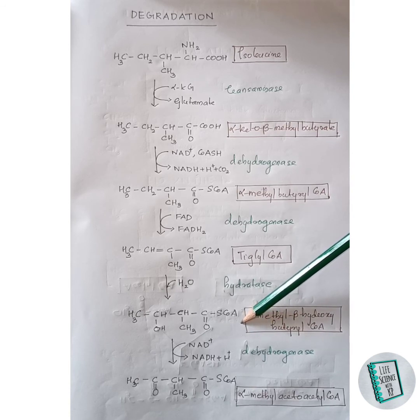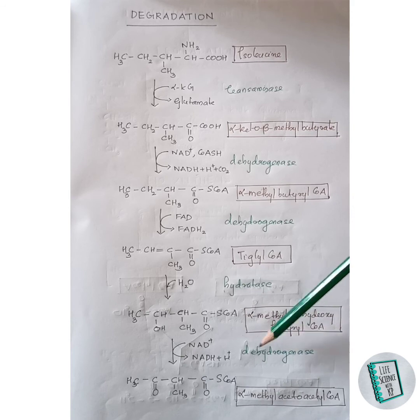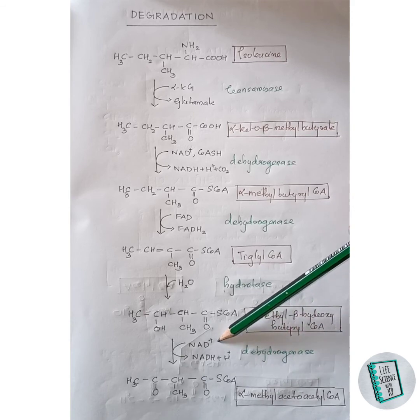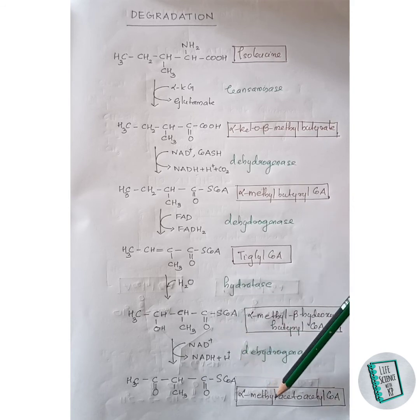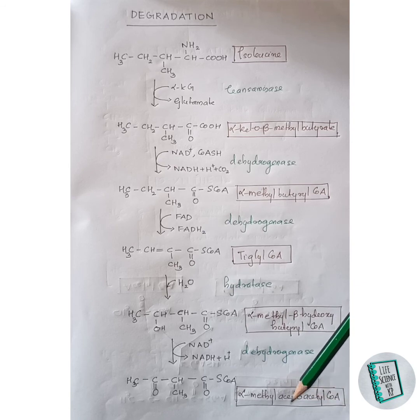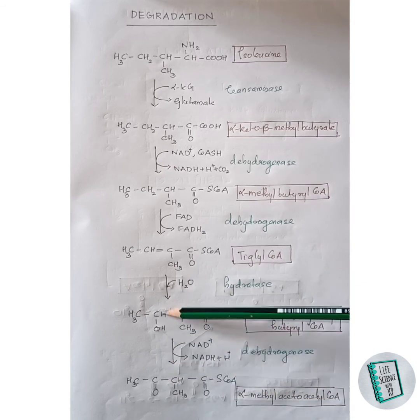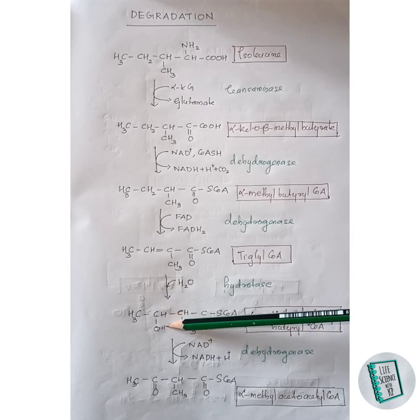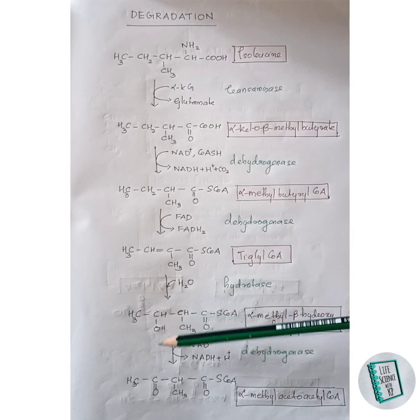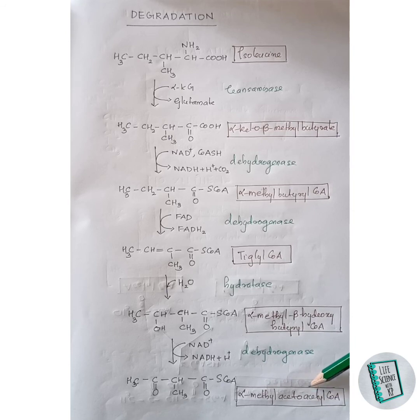Alpha-methyl-beta-hydroxy butyryl CoA then undergoes dehydrogenation in the presence of dehydrogenase enzyme, with NAD⁺ acting as a coenzyme. Hydrogen atoms are removed from the carbon and from the oxygen, forming a double bond between them. Thus alpha-methyl acetoacetyl CoA is formed.